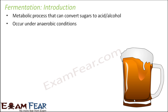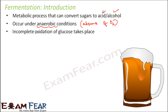Fermentation occurs under anaerobic conditions, meaning in the absence of oxygen. We do not need oxygen for this process, but the demerit is that alcohol or acids will be produced, which can be harmful when present in large concentrations inside a living organism. During this process, incomplete oxidation of glucose takes place. The first step, glycolysis, remains the same - glucose gets converted into pyruvic acid. In aerobic respiration, pyruvate gets completely oxidized, but in fermentation that pyruvate is incompletely oxidized.